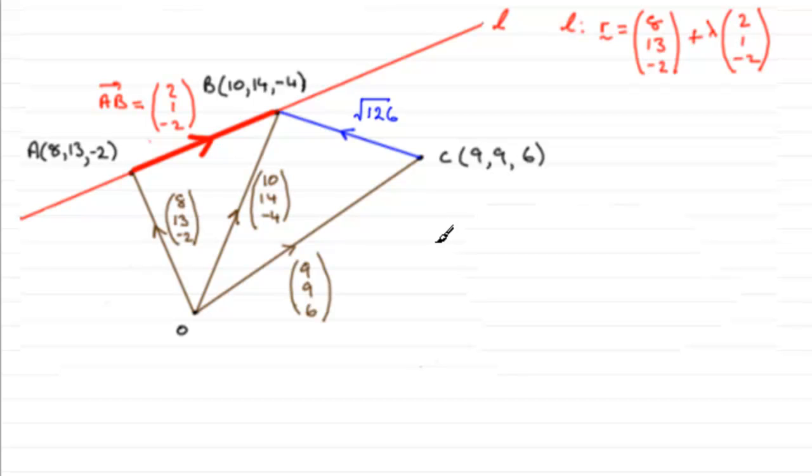And this question gets worse, if you like, as we progress through it. So definitely a good idea to keep updating your sketch. In the previous part, we found the length of CB, which I've updated now as the root of 126.